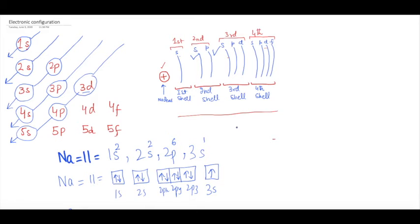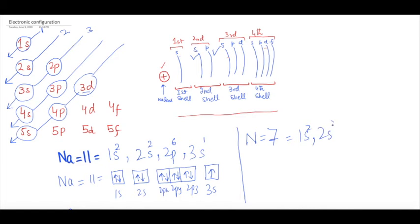Now I will write the electronic configuration for nitrogen. Nitrogen has seven electrons. Electrons go first into 1s, then 2s, then 2p. So: 1s2, 2s2. How many electrons are left? 2 plus 2 is 4; three electrons are left. So 2p3.